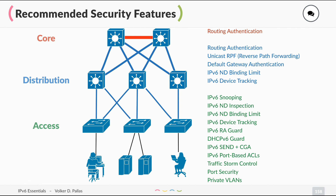You should also enable traffic storm control, port security, and private VLANs, just like with IPv4. Regarding RA guard (router advertisement guard), you can set this on ports that are not directly connected to routers — ports where you don't expect router advertisements. A client should never send a router advertisement; if it does, it might be an attacker using a man-in-the-middle attack.